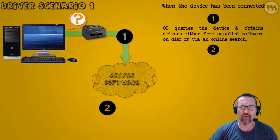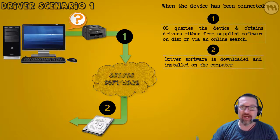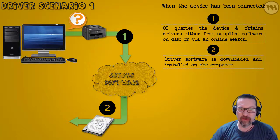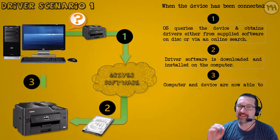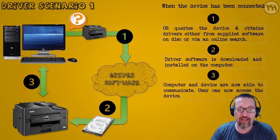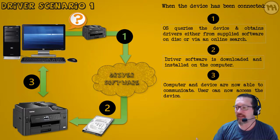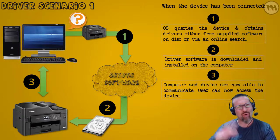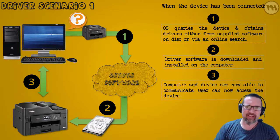Number two: the device drivers are installed onto the computer. It downloads the driver or you provide it with a disk and installs it onto the computer. Number three: the computer and the device are now able to communicate, and the user can now access and control that device.